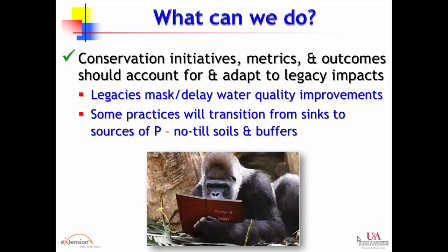We must also recognize that BMPs are not going to work indefinitely. They will transition from sinks to sources, and we need systems to manage that — such as removing vegetation from buffers to offtake nutrients, or treating buffers with materials like alum or other byproducts that can sequester phosphorus and extend their effectiveness.